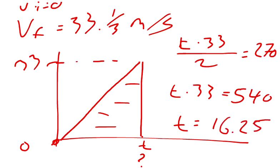The change in time is 16.25 seconds. Acceleration is change in velocity divided by change in time. The change in velocity from 0 to 33.33 is 33.33. Divide by 16.25 to get 2.06 meters per second squared.